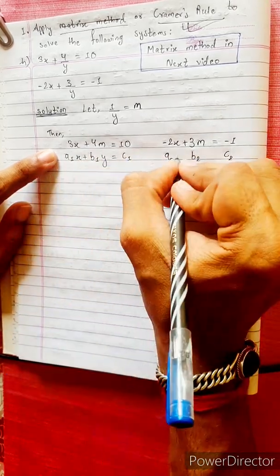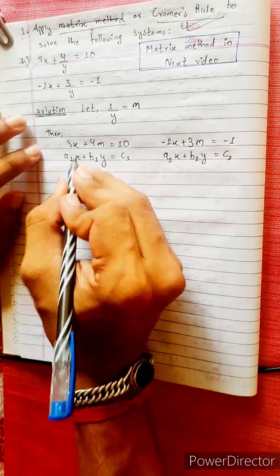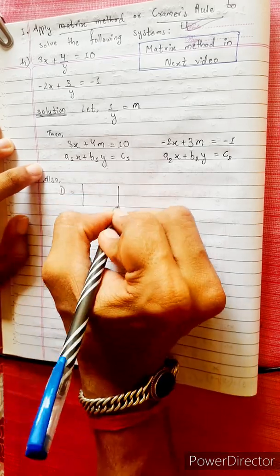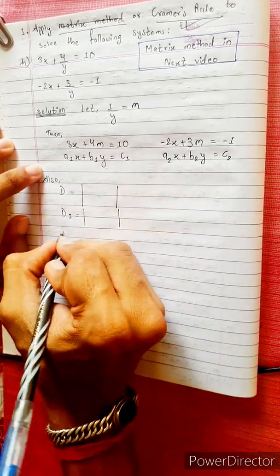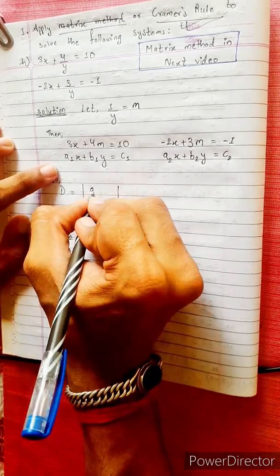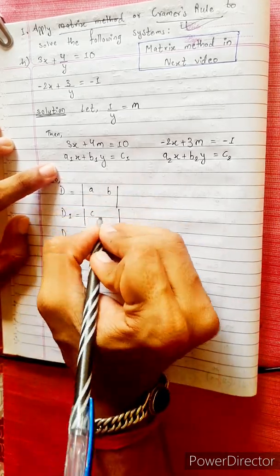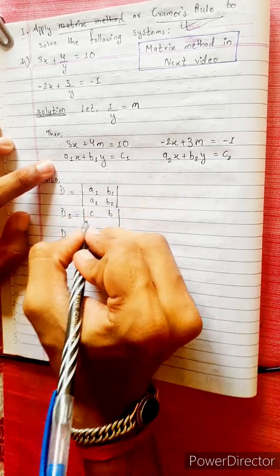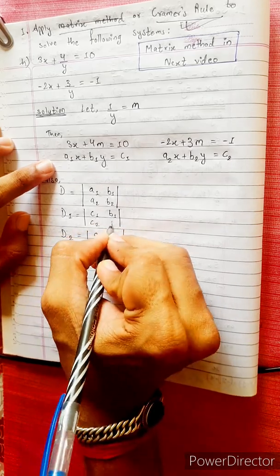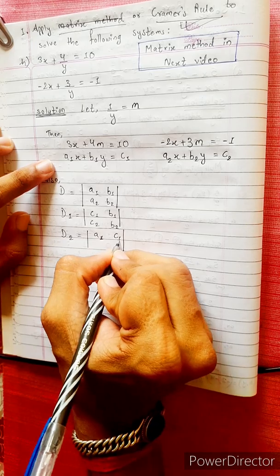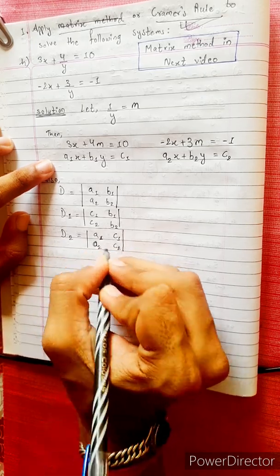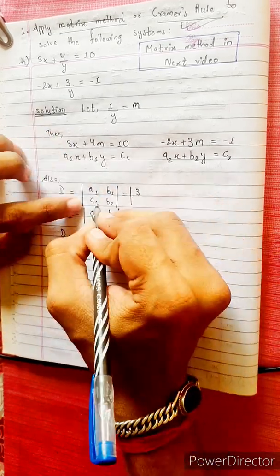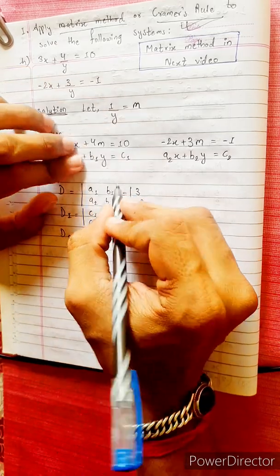So we have a1x plus b1y equals c1, and a2x plus b2y equals c2. We will use the a, b, c values. D equals to the determinant, D1 equals to, D2 equals to. We use the formula with a, b, c: a1 b1 over a2 b2, then c1 b1 over c2 b2, then a1 c1 over a2 c2.